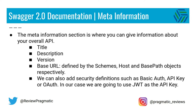In our case we're going to use the Swagger 2.0 version of the specification and we're going to describe the meta information, which includes a title, a description, the version of the API, the base URL defined by the schemas — HTTP or HTTPS — the host, for example pragmaticreviews.com, and the base path, for example slash API slash v1. We can also add security definitions such as basic auth, API key, or OAuth. In our case we're going to use JSON Web Tokens as the API key.